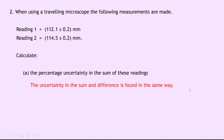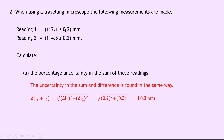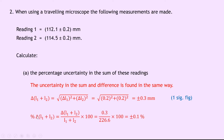It doesn't matter if you're adding two quantities together or taking away two quantities — the uncertainty in both is found in the same way. We take our values, square them, and add them together under the square root. So the uncertainty in the sum L1 plus L2 is equal to the square root of the uncertainty in L1 squared plus the uncertainty in L2 squared, which is the square root of 0.2 squared plus 0.2 squared, giving plus or minus 0.3 millimetres to one significant figure. The percentage uncertainty in the sum is 0.3 divided by 226.6 times 100, which gives us plus or minus 0.1%.